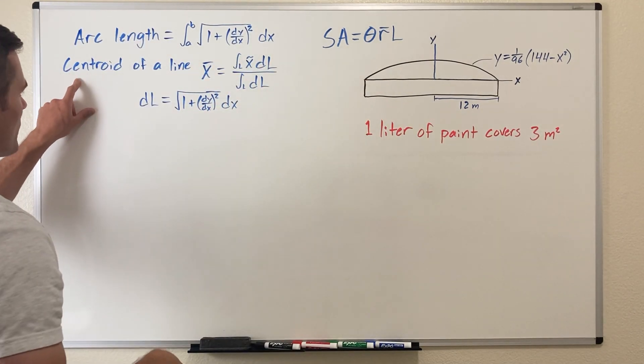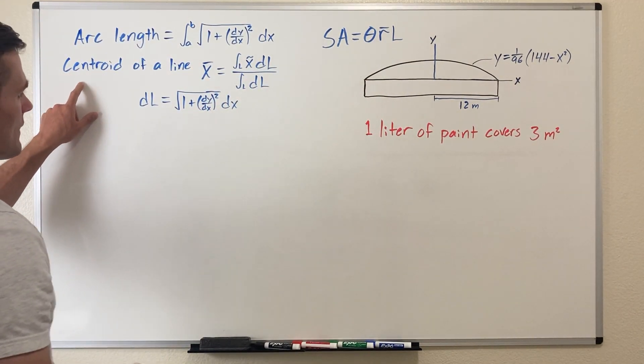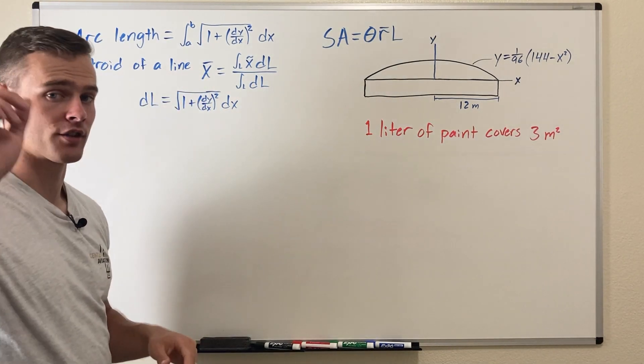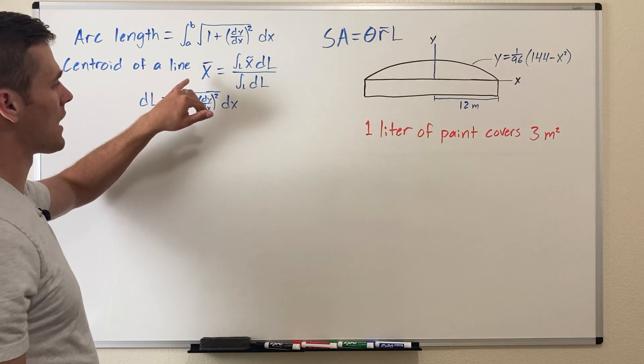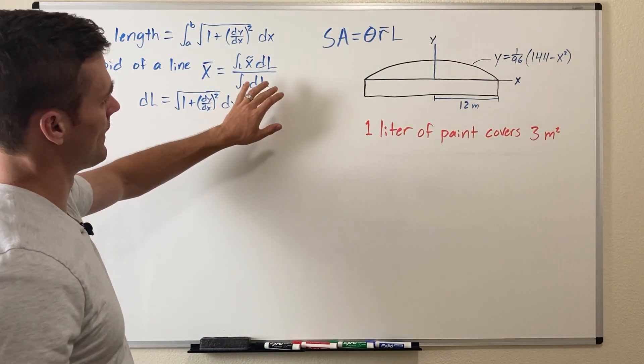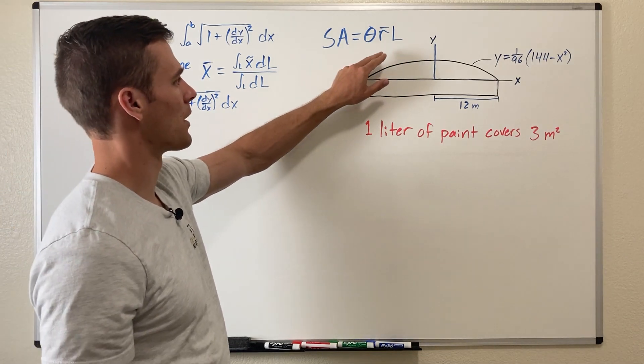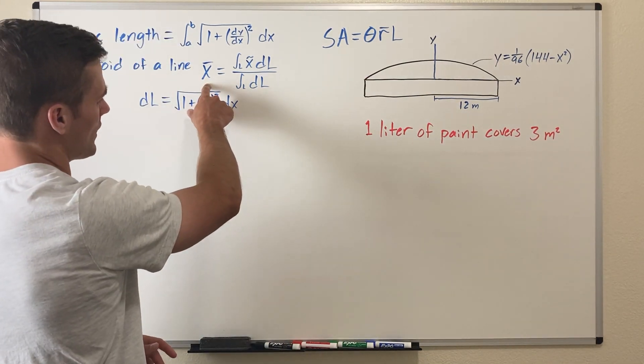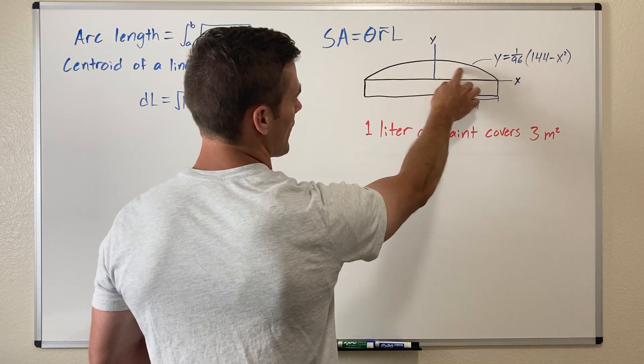We have the centroid of the line and if you want a video explaining a little bit more about that equation you can click on this video link. But we have here that x bar equals all of this, and that is how we're going to find r bar because x bar is the x coordinate of the centroid of this line.